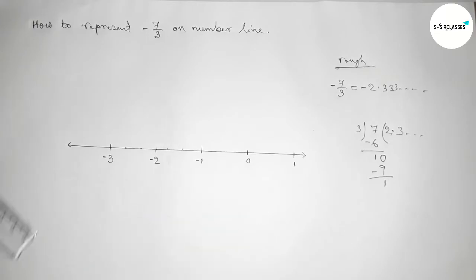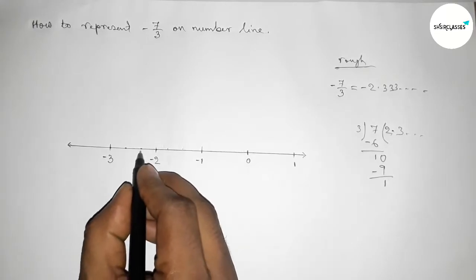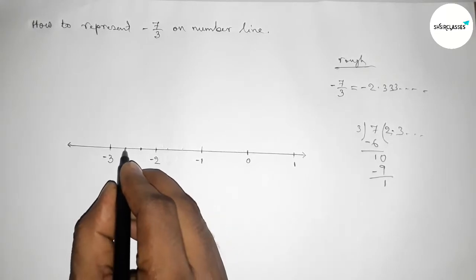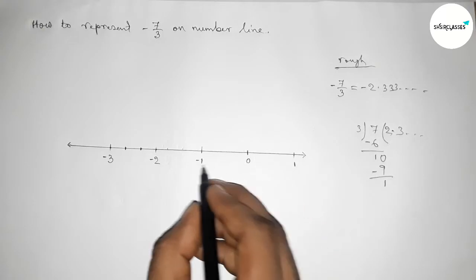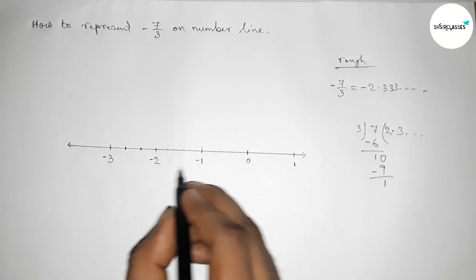We trisect the distance between -2 and -3. From zero: this is -3/3 (or -1), this is -6/3 (or -2), and this is -7/3 on the number line.